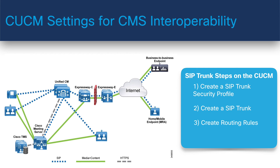There are two rule patterns that we can use. One is SIP route patterns — these match aliases in the form of a URI. The second is route patterns — these match aliases in the form of E.164.